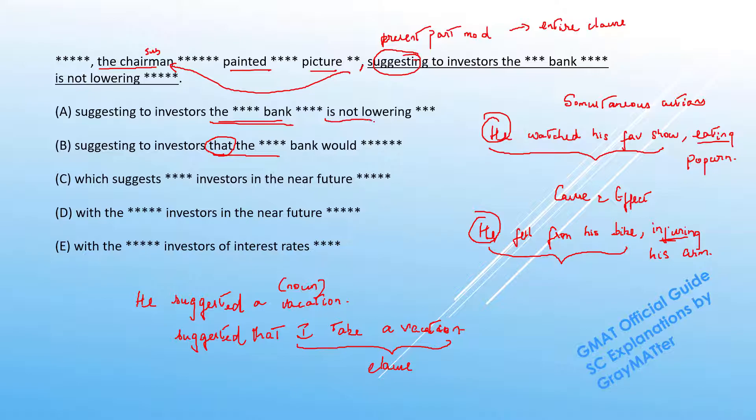Also notice in the original sentence we have "is not lowering" which is a present continuous tense. This is used to talk about an ongoing action in the present but the sentence indicates that it's an action being carried out in the future. So B says "suggesting to investors that the bank would not lower," which is actually more appropriate usage. A goes off for these reasons.